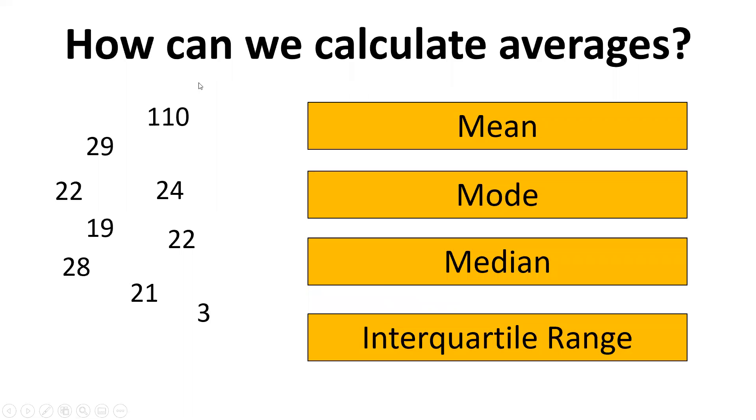Let's start by thinking about the mean. If we use the mean we simply add up the numbers, all the numbers that are over here on the left hand side. There are nine numbers here in total so then we would divide by nine.